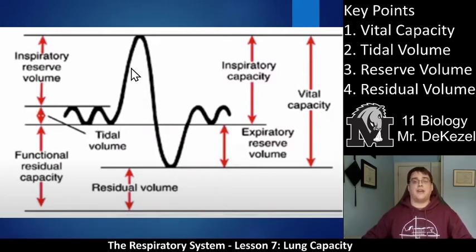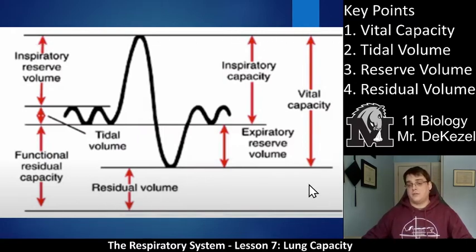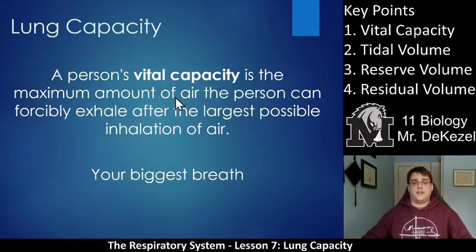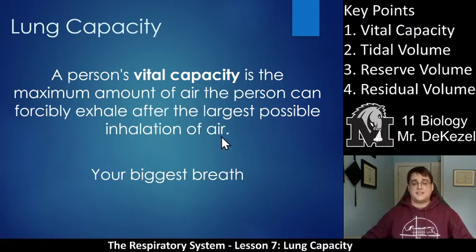This line shows how much air is within your lungs. The top line is max, and the bottom line is zero. Lung capacity: a person's vital capacity is the maximum amount of air the person can forcibly exhale after the largest possible inhalation of air. This is essentially your biggest breath.